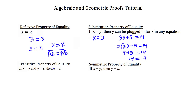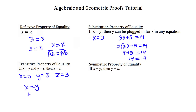The transitive property of equality states that if x equals y and y equals z, then x equals z — similar to the law of syllogism in geometry. So if x equals 3, y equals 3, and z equals 3, then not only does x equal y, but x also equals z because of the transitive property.